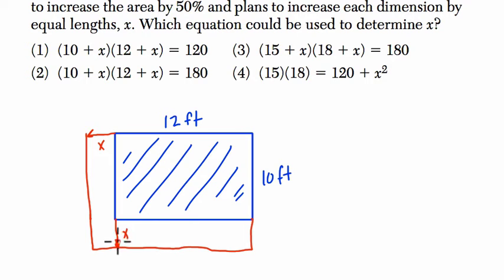So just to be clear about what we're doing, we're increasing every dimension by the same amount, by x. We're adding x onto both dimensions like this. So that means our new patio is going to be 10 plus x in this direction, right?